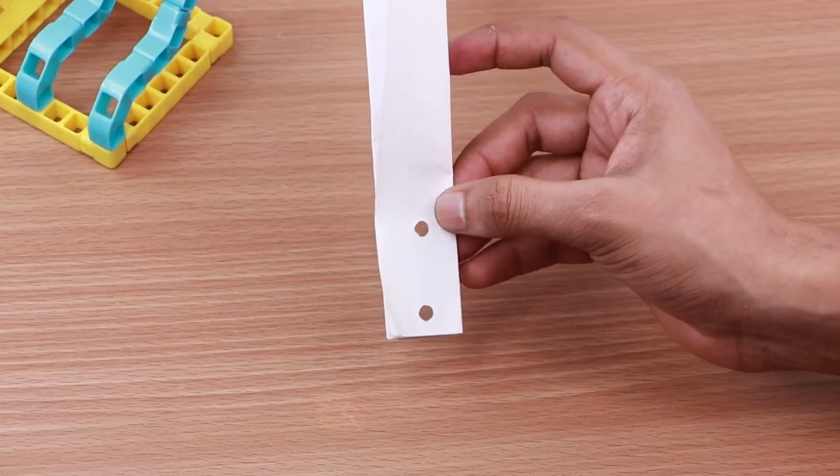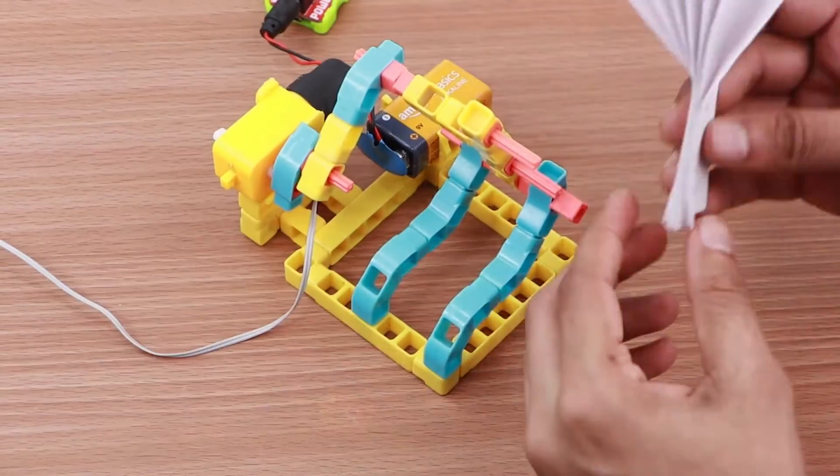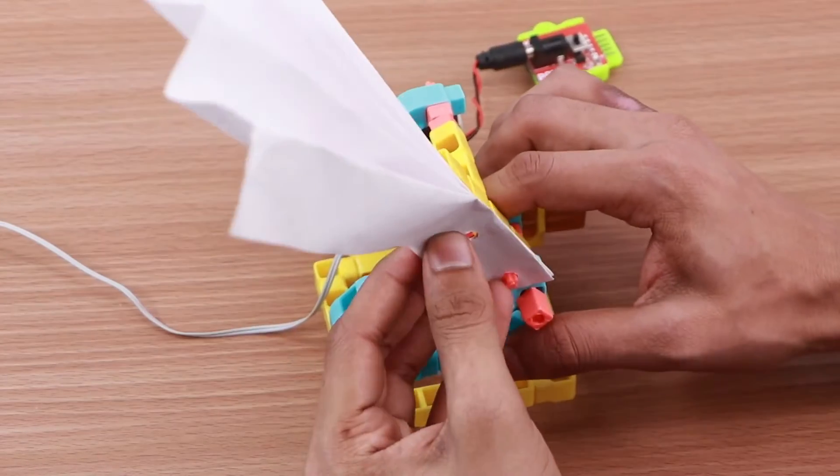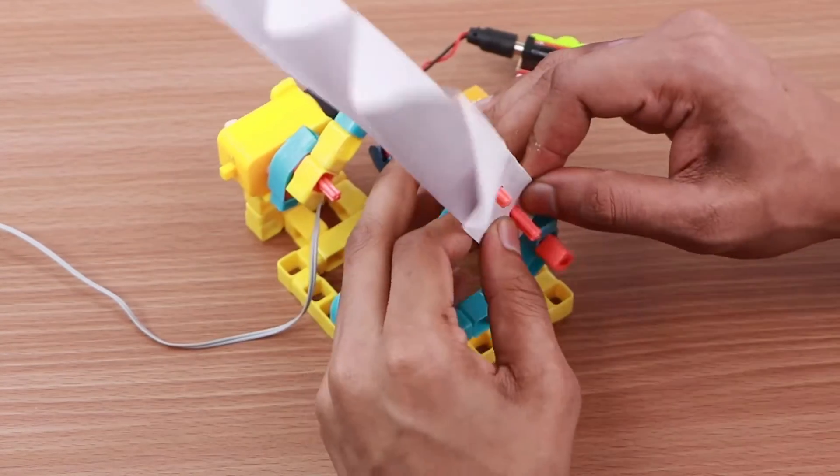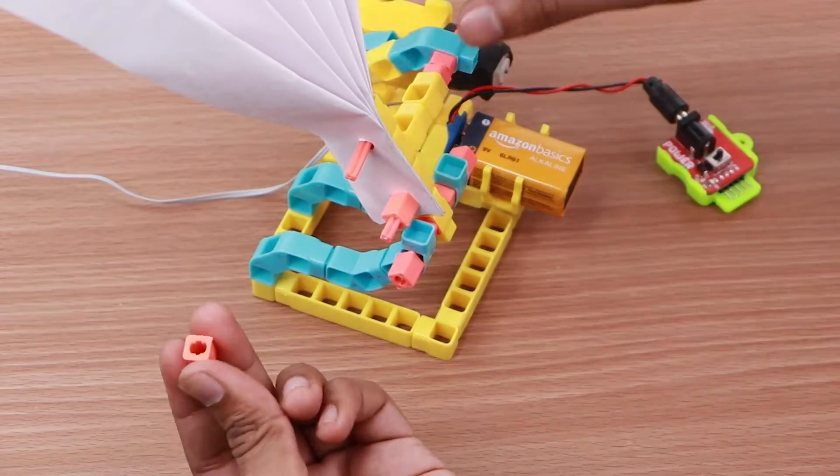Next, make two small holes in it to attach to the mechanism. Take two BO shafts and lock the paper fan in position.